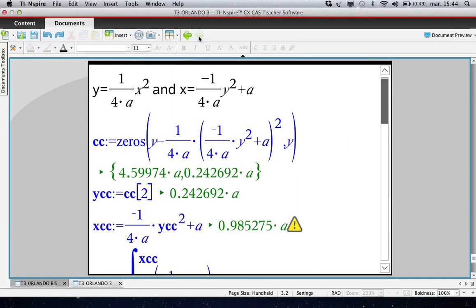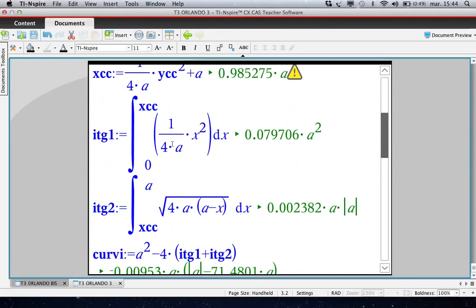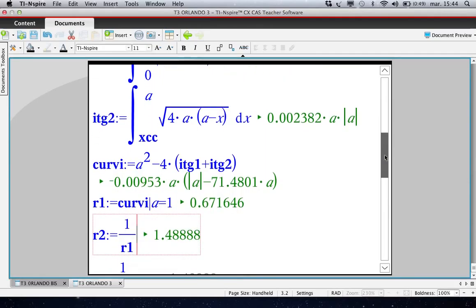So what about what we have to do? We have the ordinate of the intersection point. To get the abscissa, let us put in this equation, and we have two integrals to evaluate here and here. And the area of the curvilinear triangle given by this formula for a equal 1 gives this result.